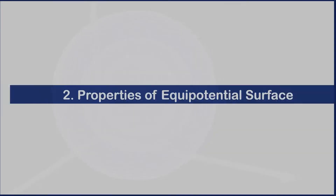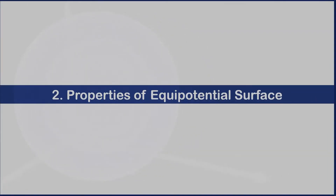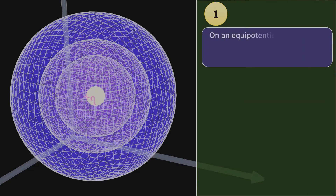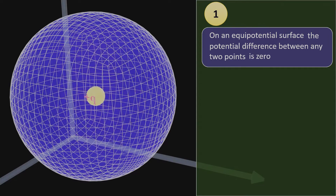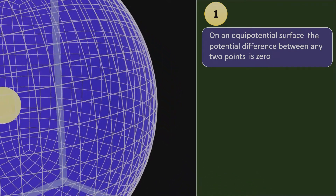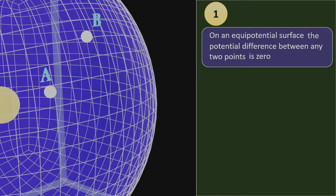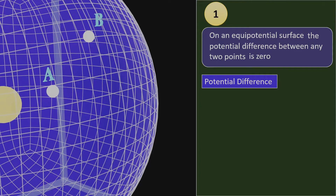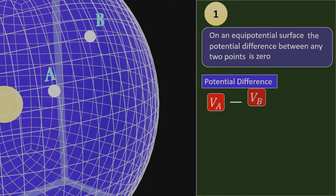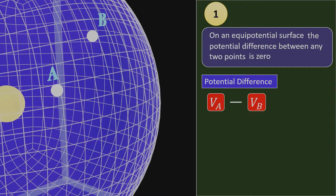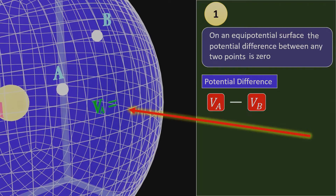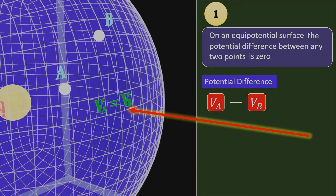Now let's talk about the properties of equipotential surfaces. Property 1: on an equipotential surface, the potential difference between any two points is zero. To understand this, let's consider two points A and B on an equipotential surface. If we look at the potential difference between these points, it will be V_A minus V_B. And since on an equipotential surface the potential is the same everywhere, V_A will be equal to V_B, resulting in a potential difference of zero.